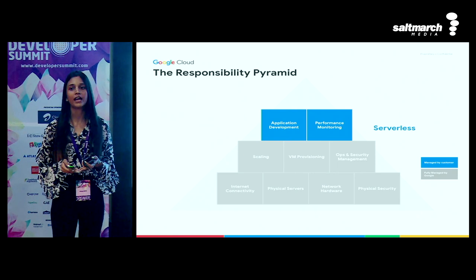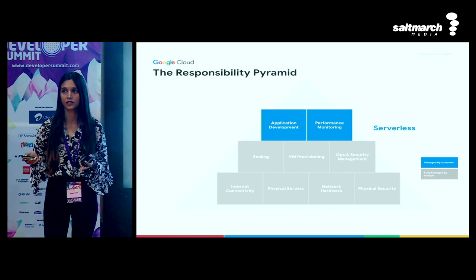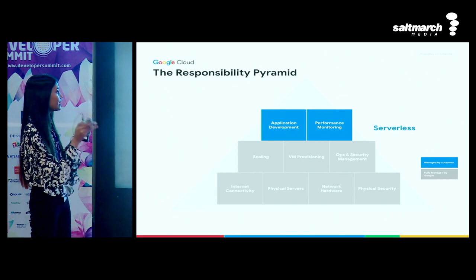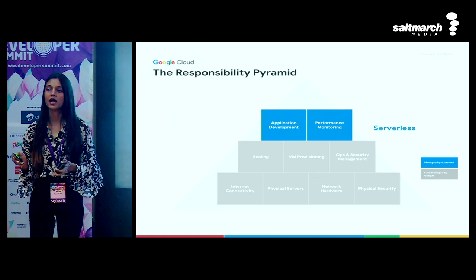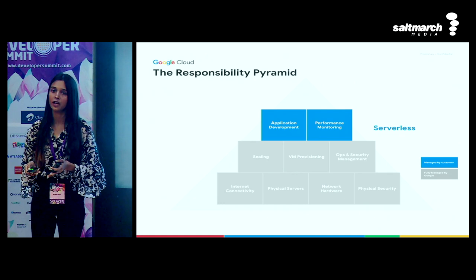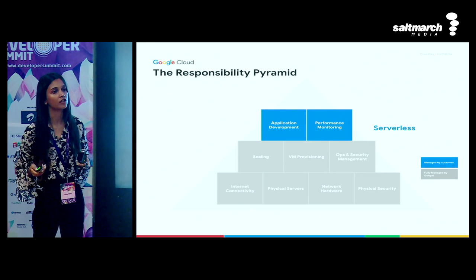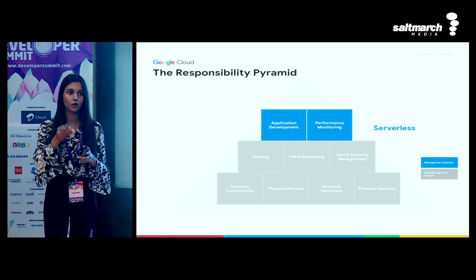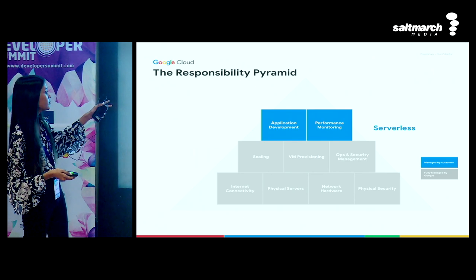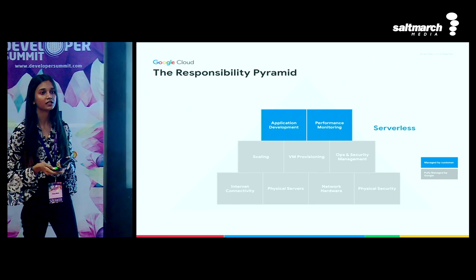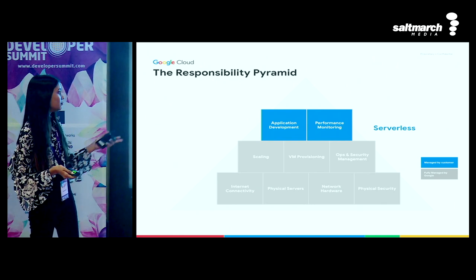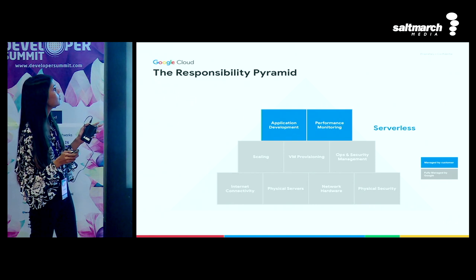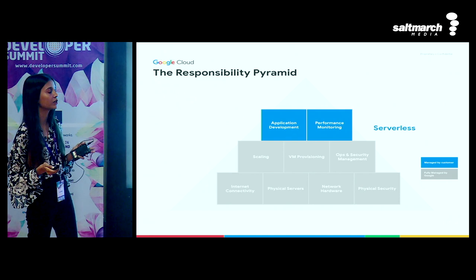As we move from cloud to serverless, the blue section is now your responsibility and the rest is managed by the cloud provider - in this case, fully managed by Google. When I need 100 VMs and my application has scaled to a million requests per second instead of just one VM when I started out, it's the responsibility of the cloud provider to give me those VMs. I don't have to patch or worry about VM security. All I care about is my application code and its performance - like needing 99.99% availability. Scaling up and down to save costs, procuring hardware - all of this is managed by Google Cloud.